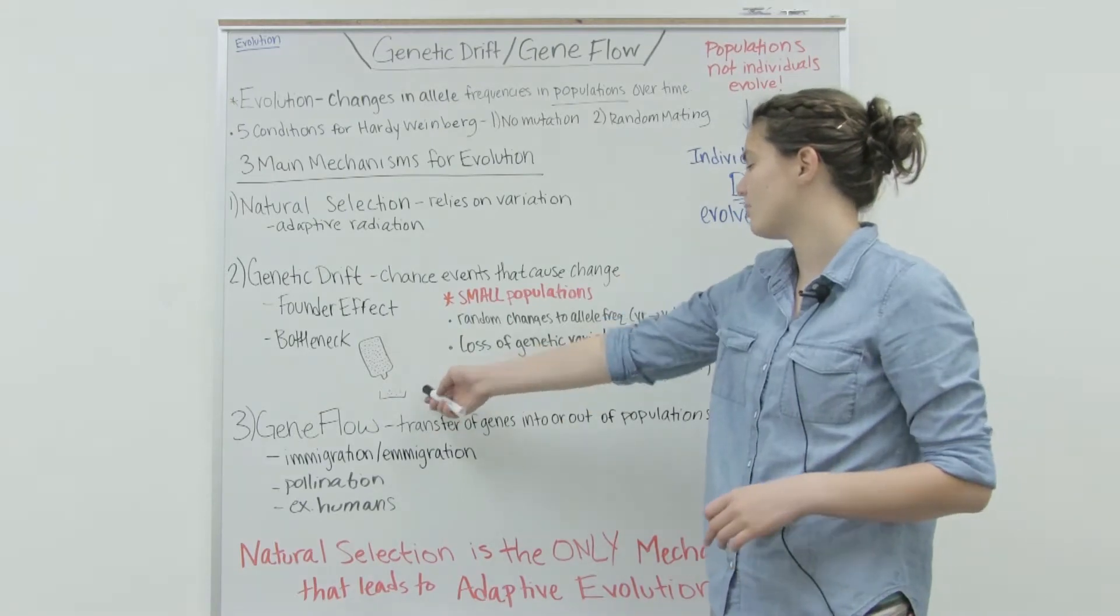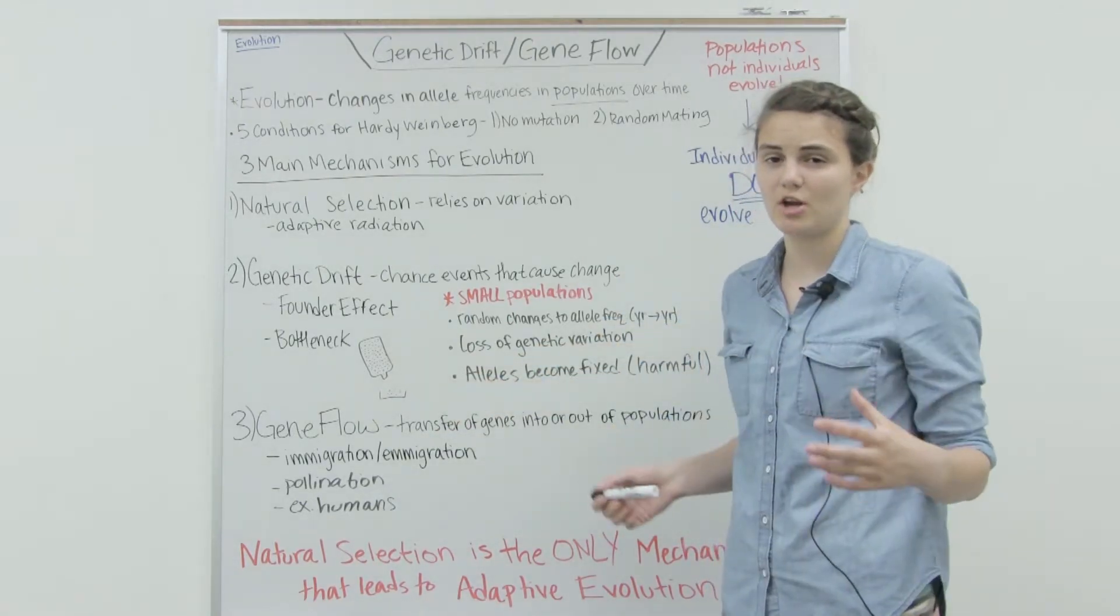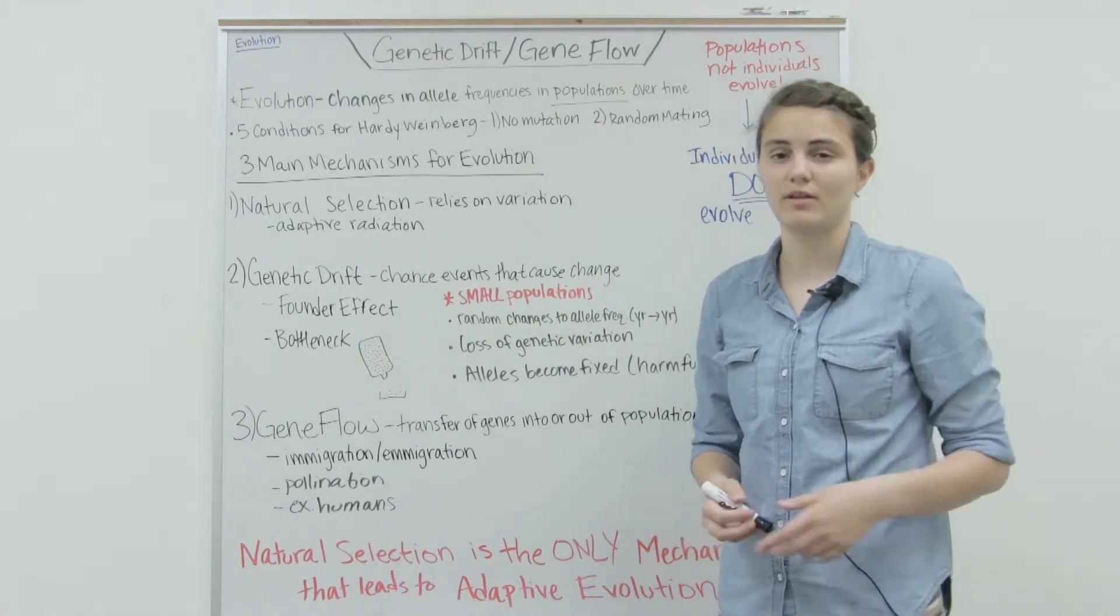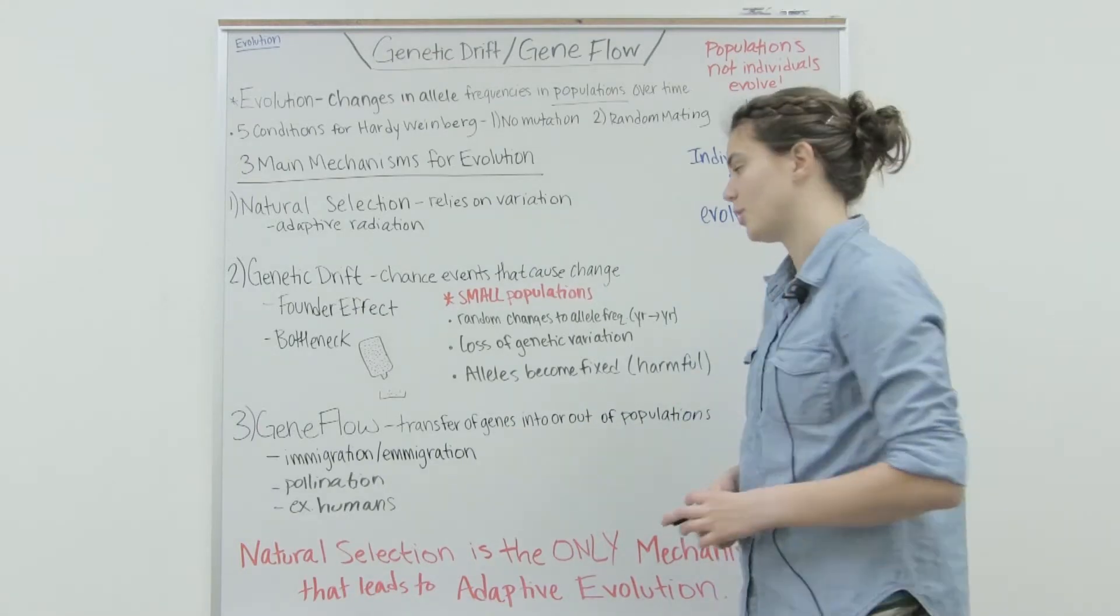Some of those alleles may be harmful and then be detrimental to the population. If we lose genetic variation, we may only be left with one allele for a certain trait, and so that's the only allele that can be spread throughout the population.